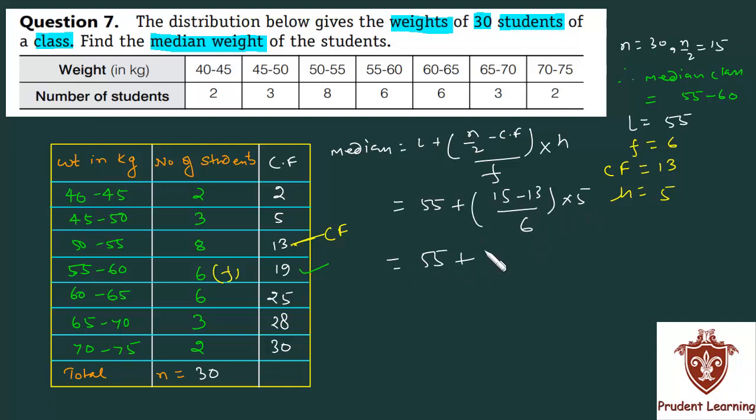1 by 3 times 5 is 5 by 3, which equals 1.66. So this is 55 plus 1.66, which finally gives us 56.66.